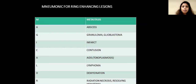There is a mnemonic for ring-enhancing lesions — it is 'Magical DR.' M stands for metastasis, A for abscess, G for granuloma and glioblastoma, I for infarct, C for condition, A for AIDS which includes toxoplasmosis, L for lymphoma, D for demyelination, R for radiation necrosis or resolving hematoma.